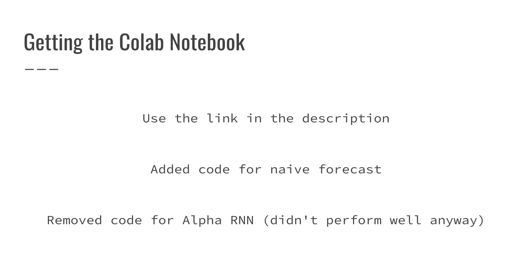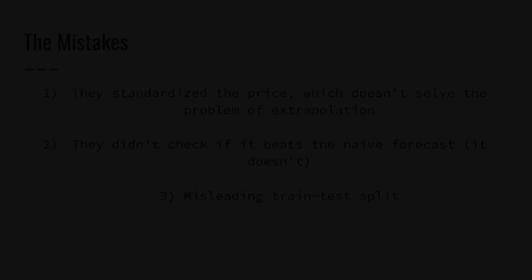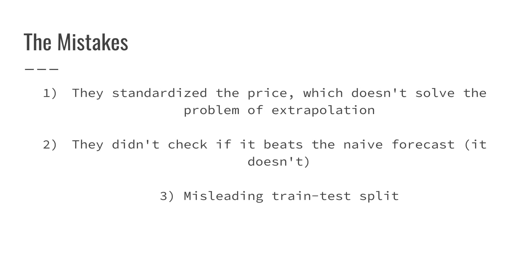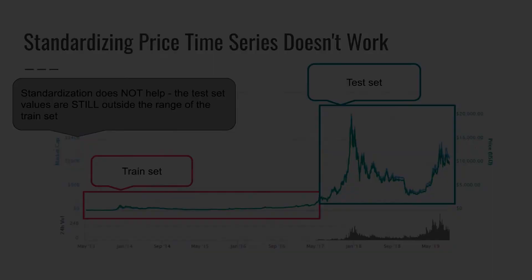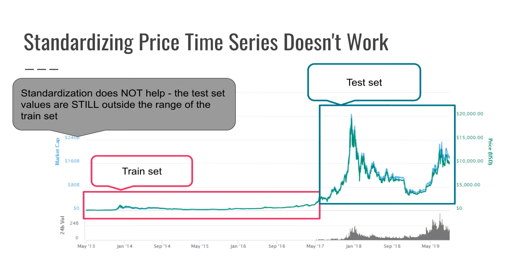The mistakes I'll cover in this video are as follows. Number one: they only standardize the price time series, which does nothing about the problem of extrapolation. Number two: they never check whether their model can beat the naive forecast — spoiler alert, I checked, and it doesn't. The models they built are worse than useless. Number three: misleading train-test split. So let's talk about mistake number one — why standardizing a price time series does not work.